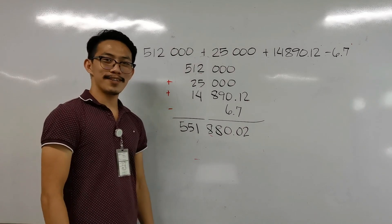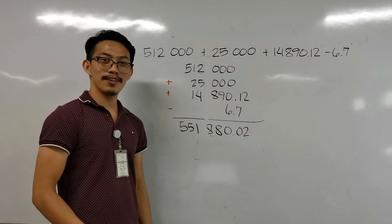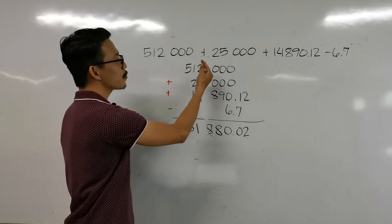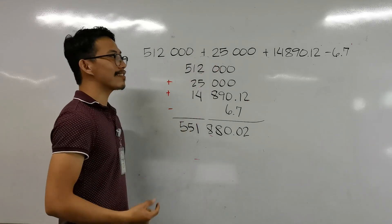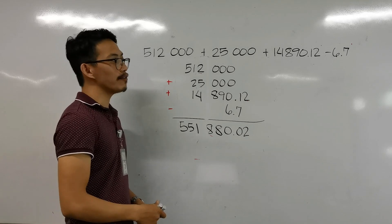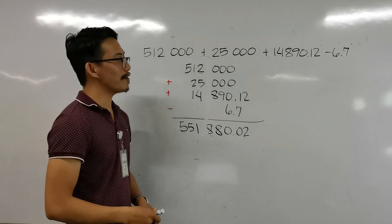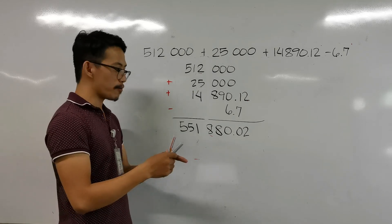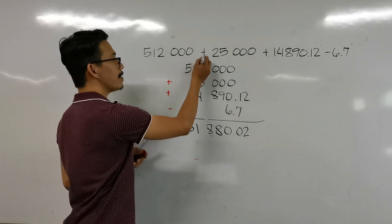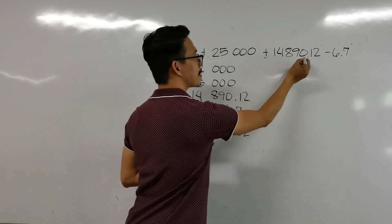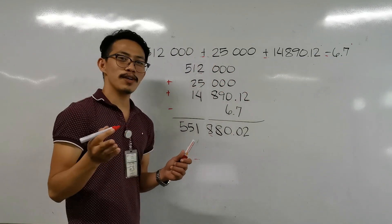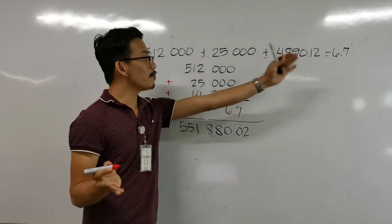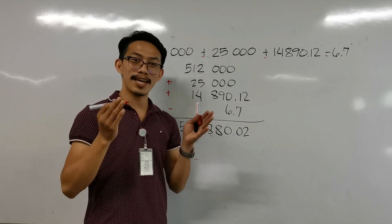Let's look at another example. We have 512,000 plus 25,000 plus 14,890 plus 19.12 minus 6.7. Again, the first step is to take note of the operations used. We only have addition and subtraction, so there is only one rule, and we can solve them using our calculator directly.